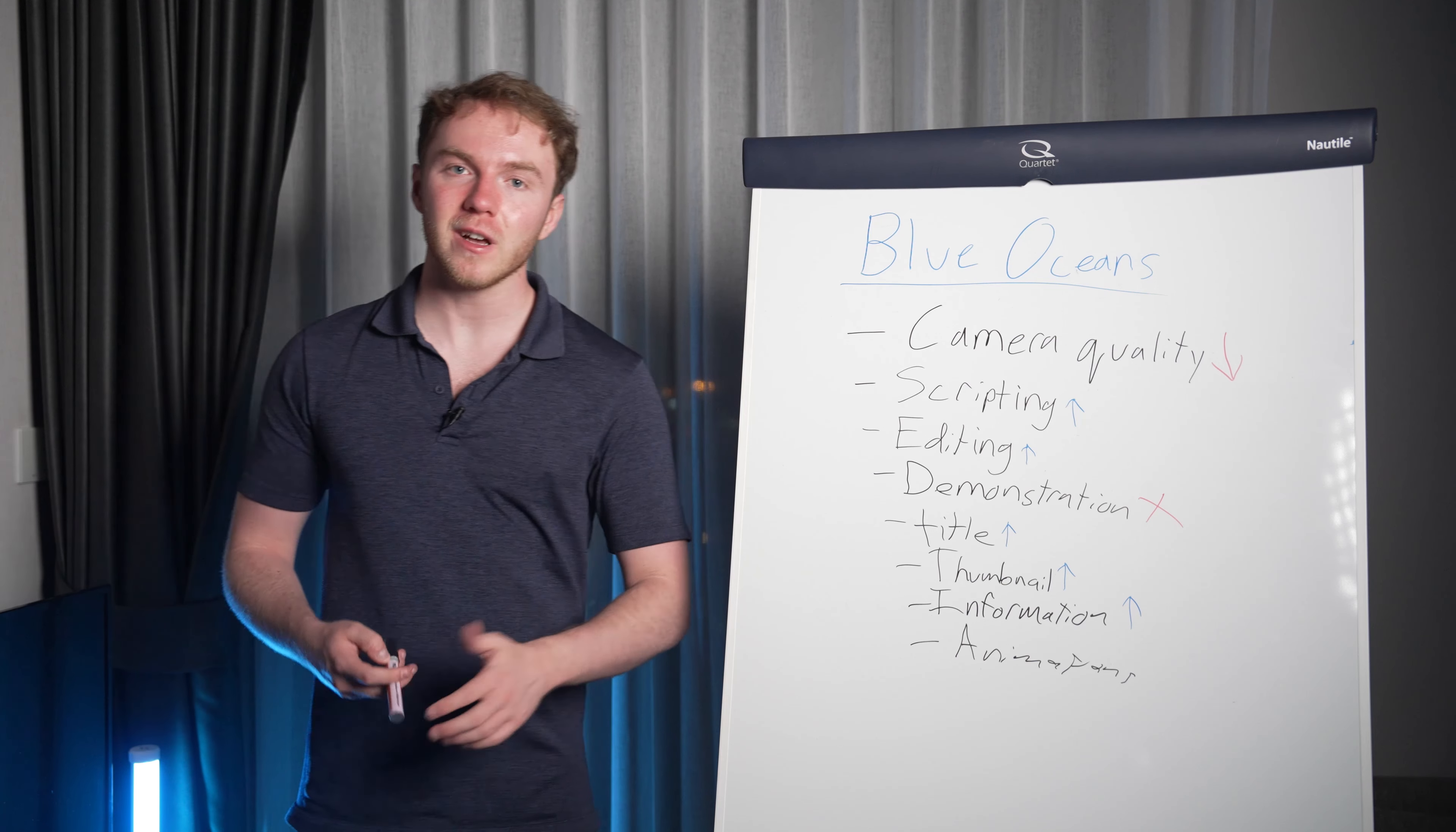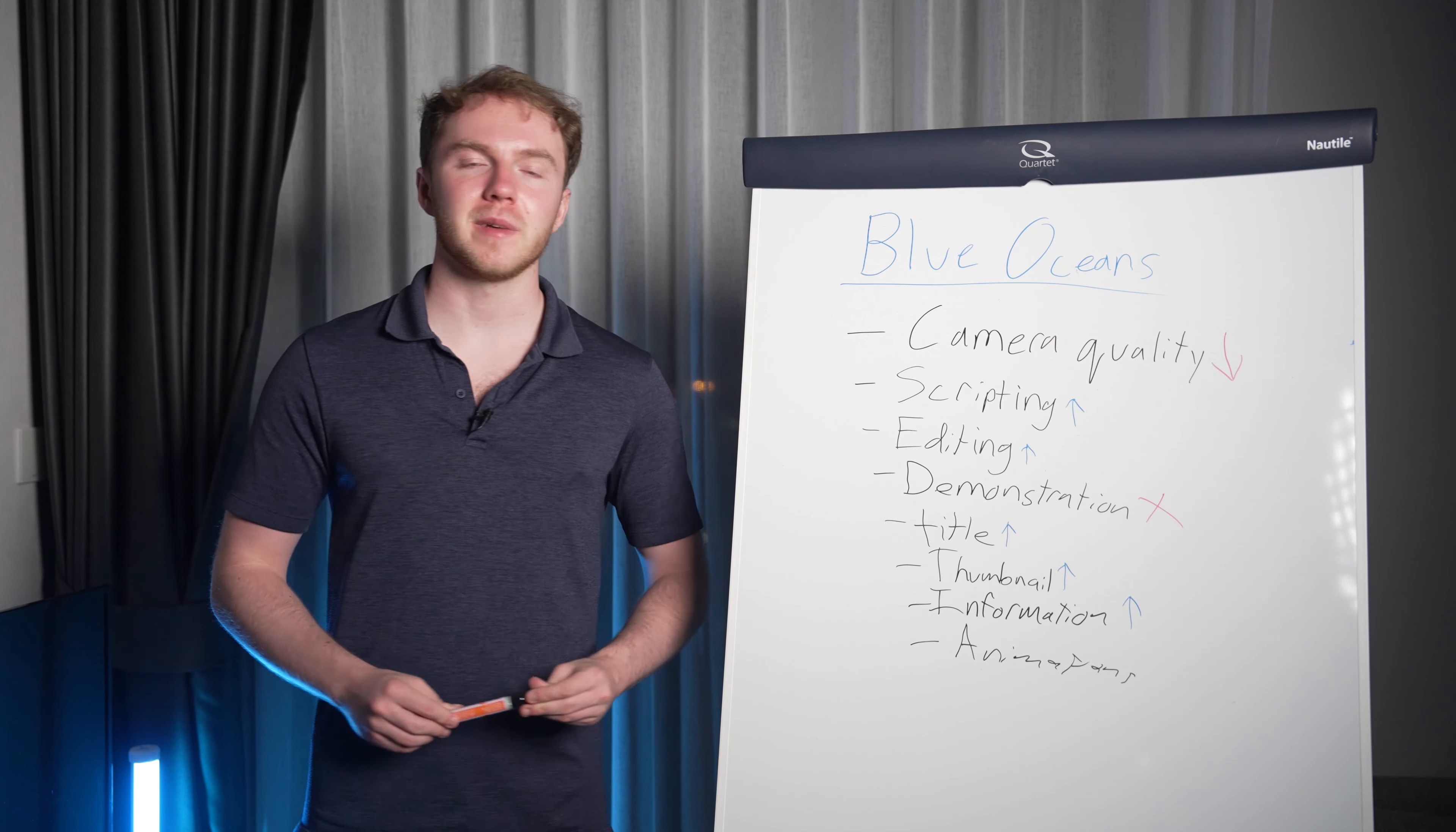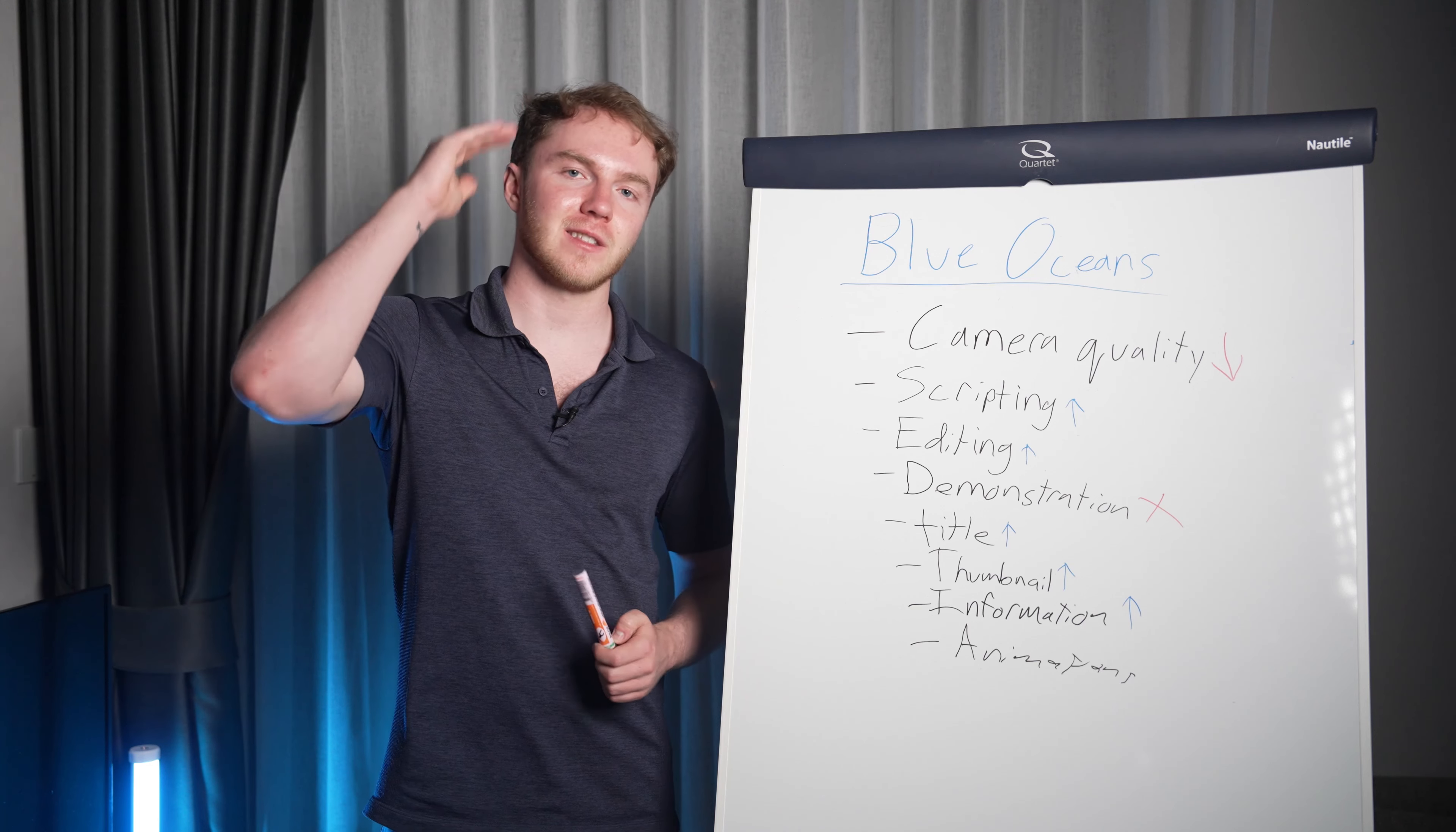So how you can do this for yourself is just write down everything, the entire process on what goes into making a video from editing, scripting, intros, thumbnails, titles, animations, B roll, music, sound effects, all these different elements that go into it. Tonality in your voice, having actors, really anything. It could be literally anything. Just write it all down and then figure out what you want to eliminate, what you want to reduce, what you want to create and what you want to raise the bar on.